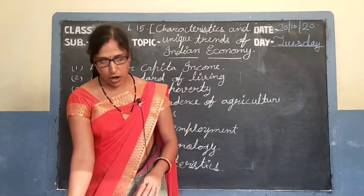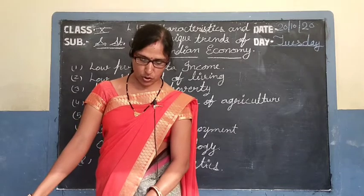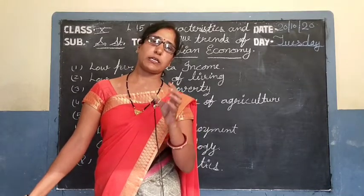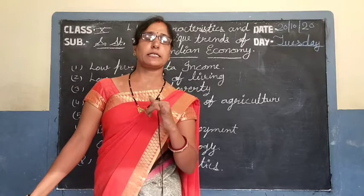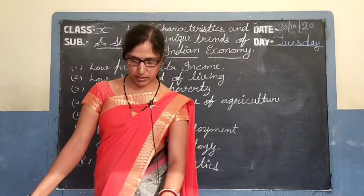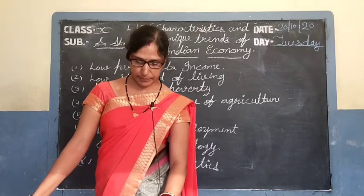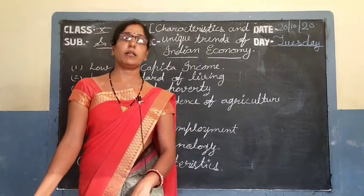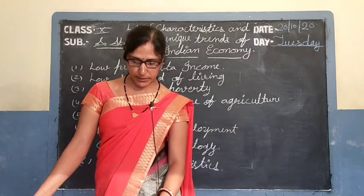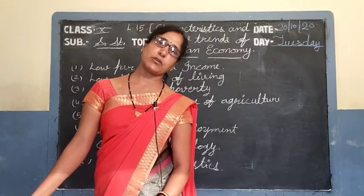The last topic is other characteristics. Apart from the above-mentioned characteristics, low level of human development, broad inequality, and weak basic infrastructure also portray the underdeveloped form of the Indian economy. In the 2015 report of the Human Development Index prepared by the United Nations Development Programme, India stood at the 130th place, meaning India is included among countries having a medium human development index.